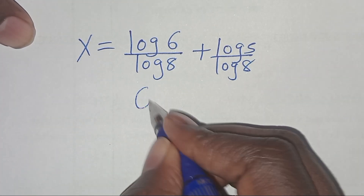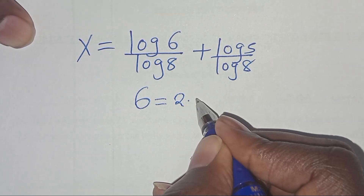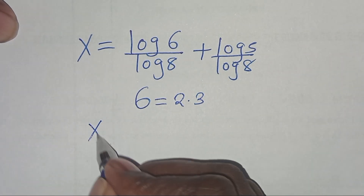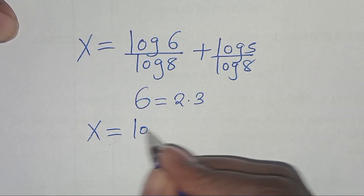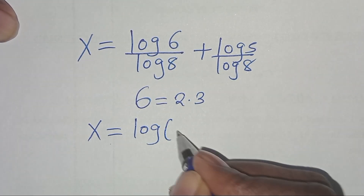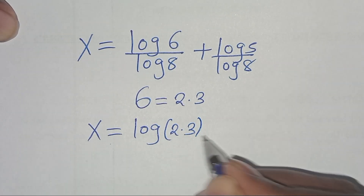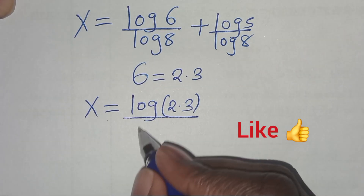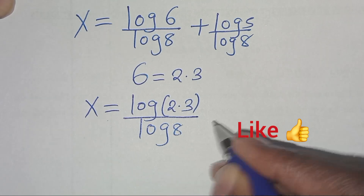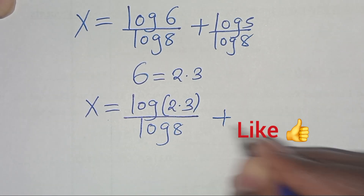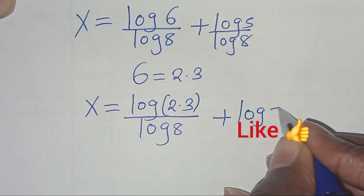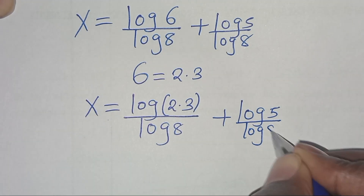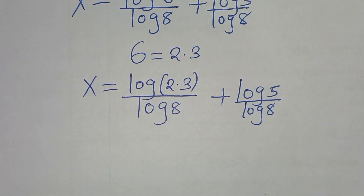We can express 6 as 2 times 3. So this implies that x is equal to log(2 times 3) divided by log 8, plus log 5 divided by log 8.